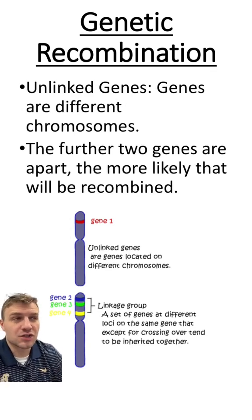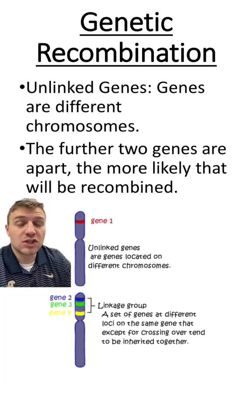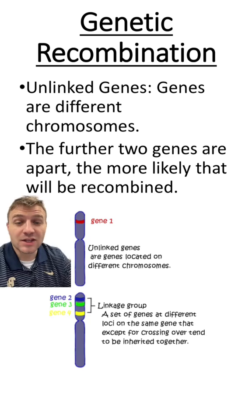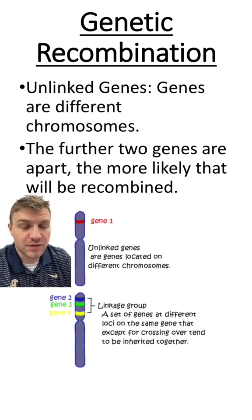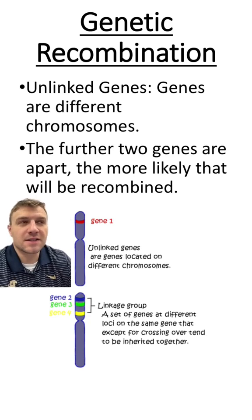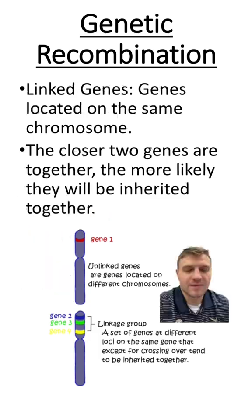Unlinked genes are genes that are found on different chromosomes. You can see gene 1 and genes 2, 3, and 4 are unlinked because they're found on different chromosomes. This is because these chromosomes will independently assort and segregate from each other during meiosis.